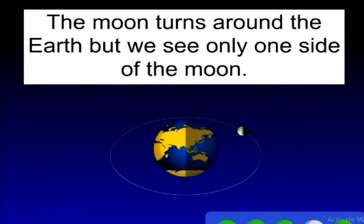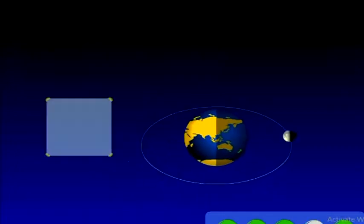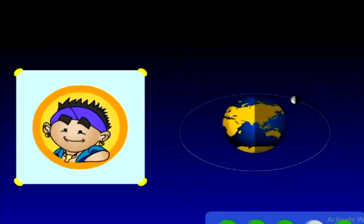The moon turns around the Earth, but we see only one side of the moon. Why is this so?